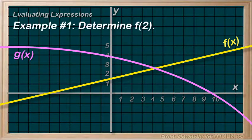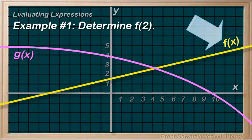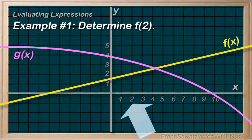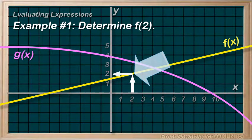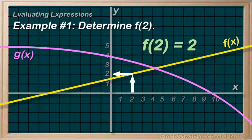Example 1: Determine f(2). Now we don't have an equation, but this indicates we're talking about function f — so this graph. The 2 in the brackets tells us that our variable x is 2. So on the graph, we're just looking for x equals 2. We follow up from x equals 2 and we see that on graph f, we have a y value of 2. Therefore, f(2) is equal to 2.